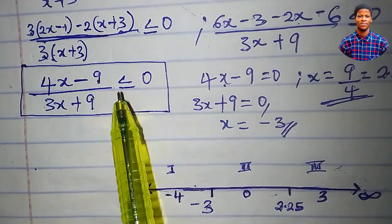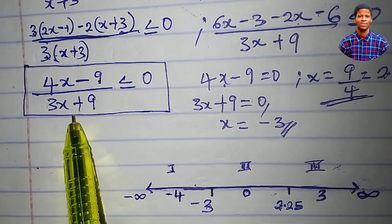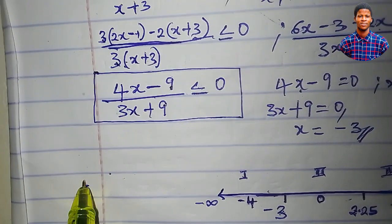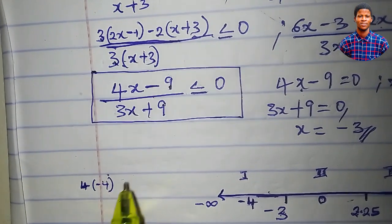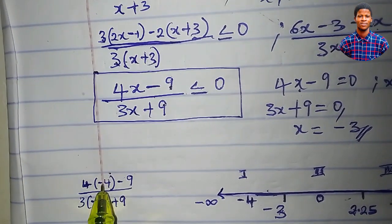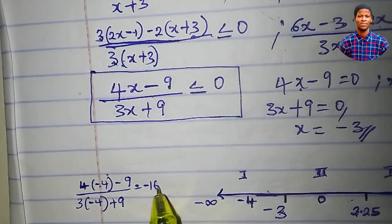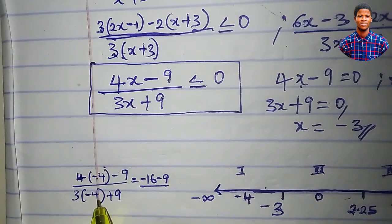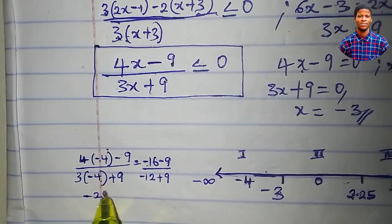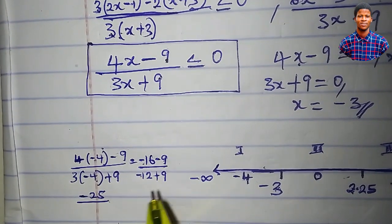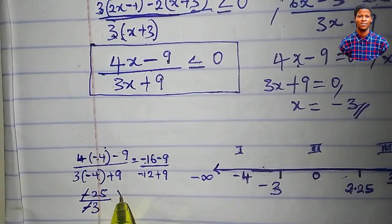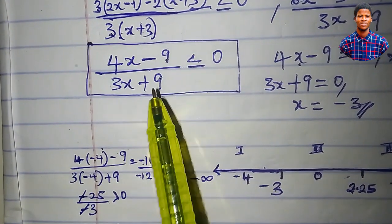The inequality says less than or equal to 0, so the left-hand side can be negative or 0. Testing region 1 with minus 4: 4 times minus 4 minus 9, all over 3 times minus 4 plus 9. Minus 16 minus 9 is minus 25; minus 12 plus 9 is minus 3. Minus 25 over minus 3 gives a positive number, 25 over 3, which is greater than 0. Region 1 does not satisfy this inequality.